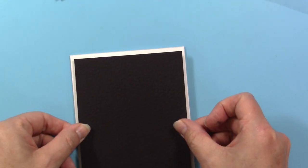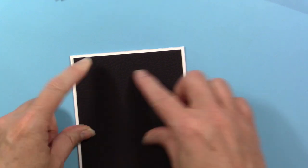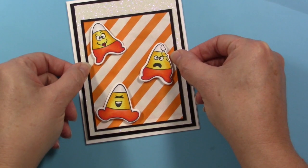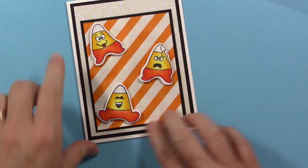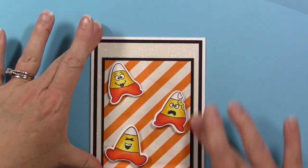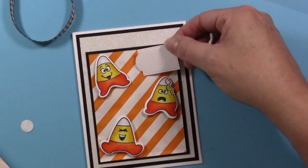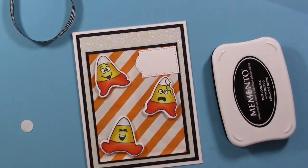Then I'll adhere that white piece that has the envelope and candy corns on it, centered into the black cardstock. This is truly an easy card, a very easy layout. I just like the idea of having this little gift bag on top that you can put a gift card in.